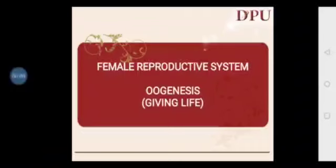Hello students. We will see what is the concept behind oogenesis. Oogenesis is defined as a process of development and maturation of ovarian follicles and development of oocytes to ultimately give an ovum that will be fertilized by the sperm and produce a diploid zygote. Oogenesis is very important to continue the progeny.